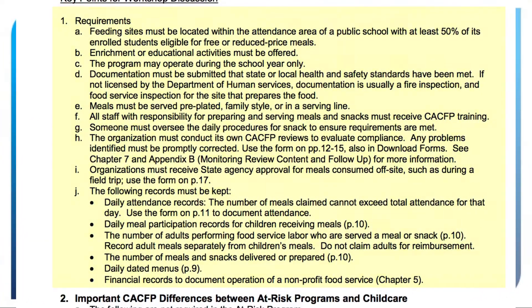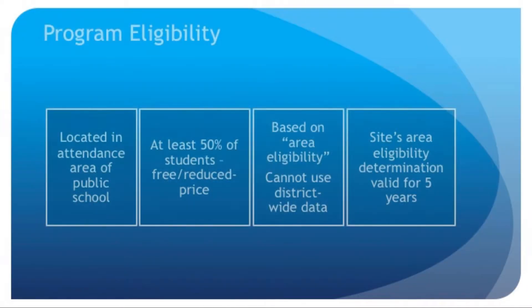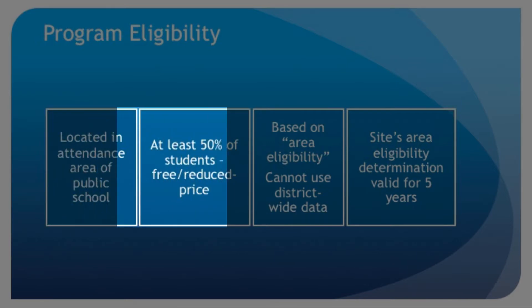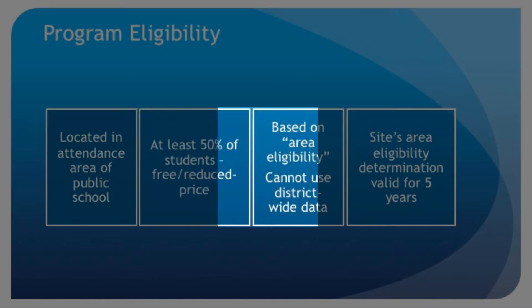This lesson will outline the requirements for participation in the program. To be eligible to participate in the At-Risk Program, the site must be located in the attendance area of a public elementary, middle, or high school where at least 50% of the students are eligible for free or reduced-price meals under the National School Lunch Program. This is referred to as area eligibility.